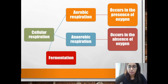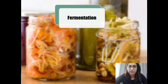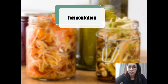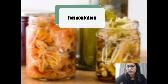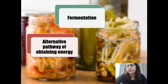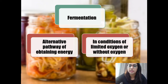And next is fermentation. So what is fermentation? Fermentation is the incomplete breakdown of glucose in anaerobic conditions — meaning without oxygen — to release a little energy. It is also a catabolic process which is catalyzed by enzymes. Although fermentation occurs in anaerobic conditions, fermentation is different from anaerobic respiration. It is actually an alternative pathway in obtaining energy, and occurs in the same condition of limited oxygen or without oxygen.